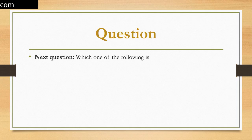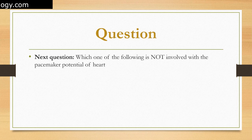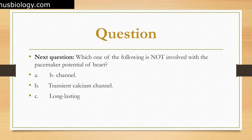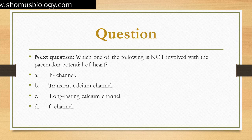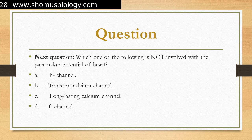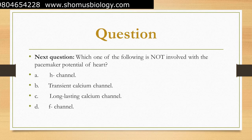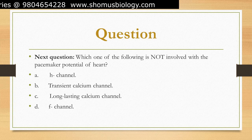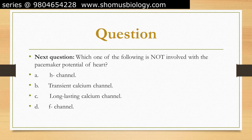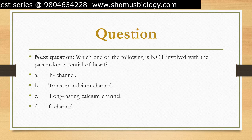Which one of the following is not involved with the pacemaker potential of the heart? The pacemaker potential of the heart is generated by specialized cardiac cells called the sinoatrial (SA) node. The SA node depolarizes spontaneously, generating a pacemaker potential that triggers the contraction of the heart. The pacemaker potential is caused by the opening and closing of various ion channels. Among the ion channels listed, the long-lasting calcium channel is not involved in the pacemaker potential of the heart.